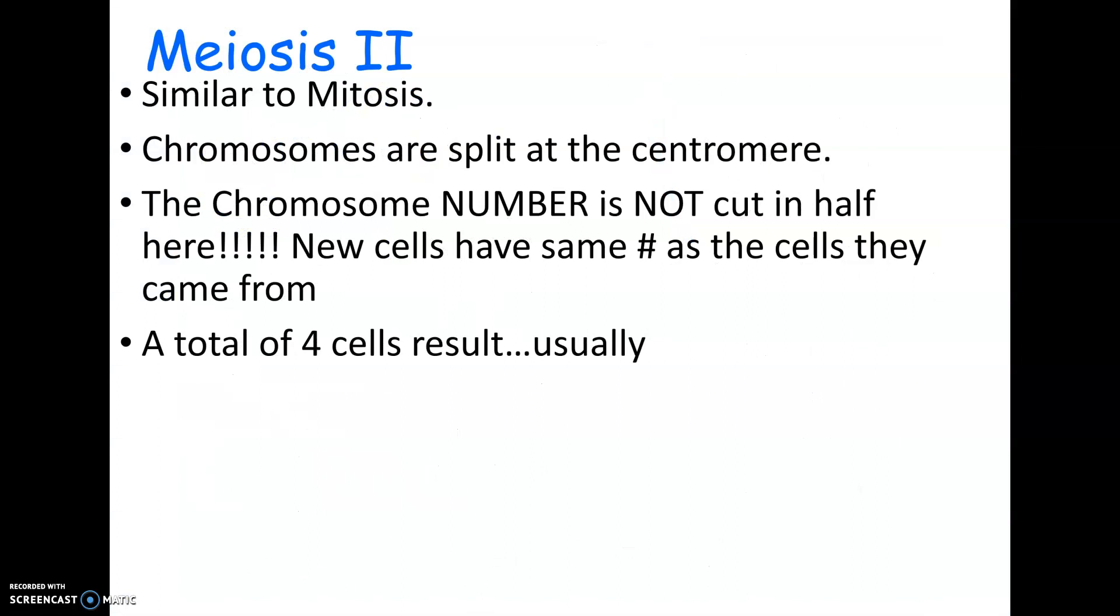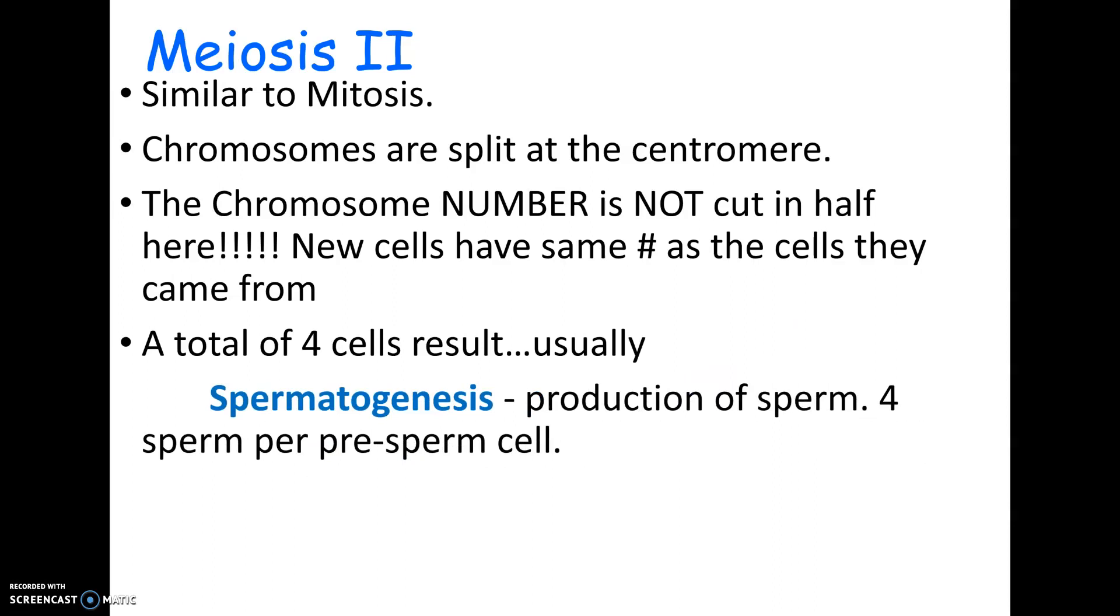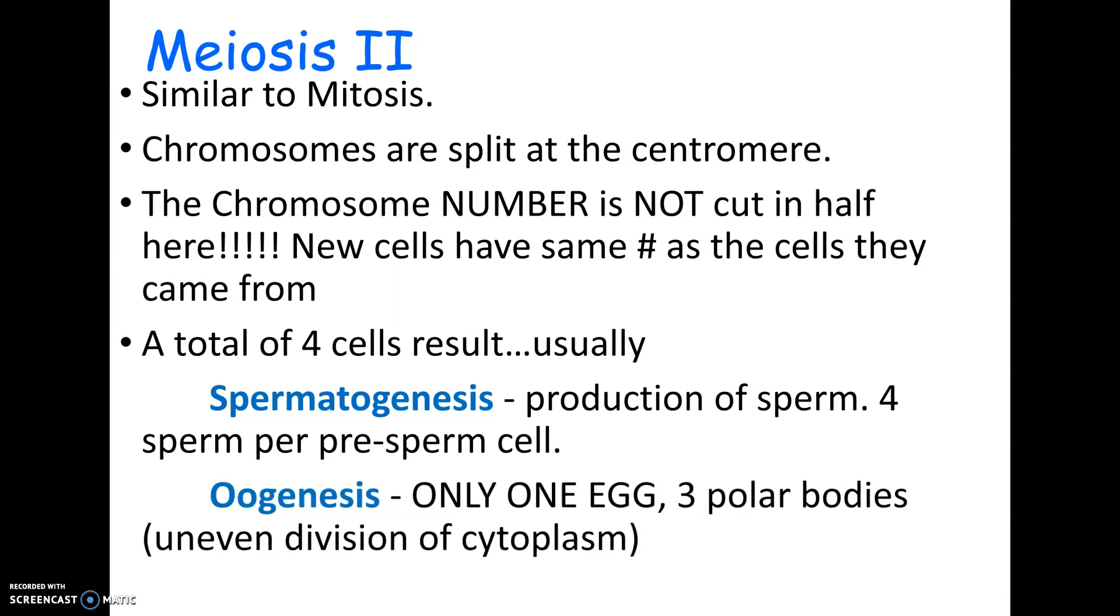Now, it does turn out that there is one other caveat to this, and that is that in, yes, in spermatogenesis, which is the making of sperm, you do get four sperm for every pre-sperm cell. However, that is not true for eggs. So it turns out that in the making of eggs, you only make one egg ovum for every pre-egg cell. And if you think about this, this would answer a question that you might think of if you really think about this long enough.